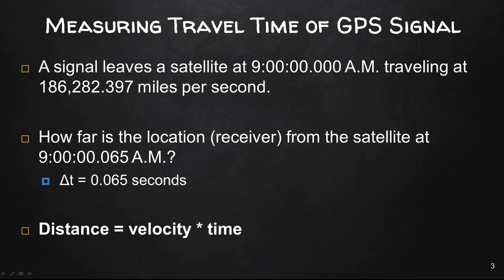Remember that distance equals velocity times time. For the velocity, we would just put in the speed of light, and the time would be 0.065. The answer is 12,108.36 miles away. That is how far away the satellite is from the position that receiver is at. This is just an example of how we calculate this distance from the receiver to the satellite.